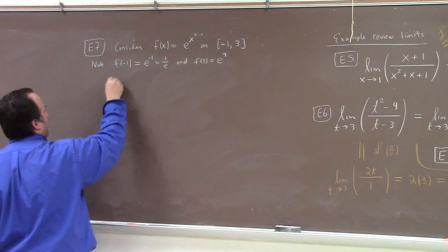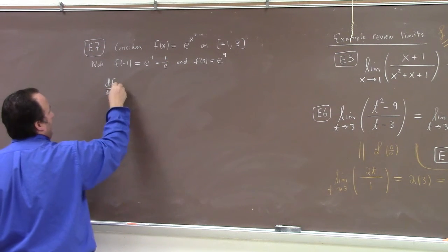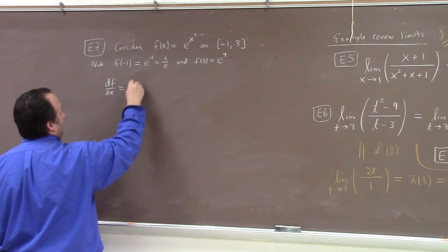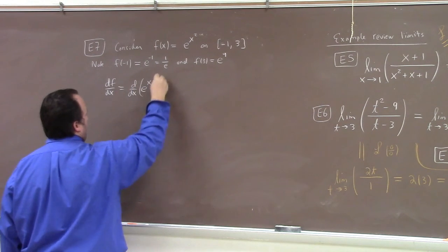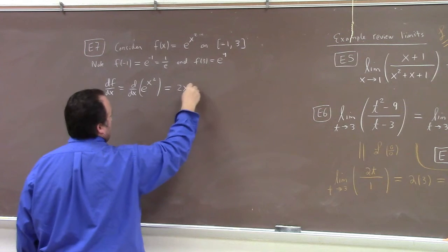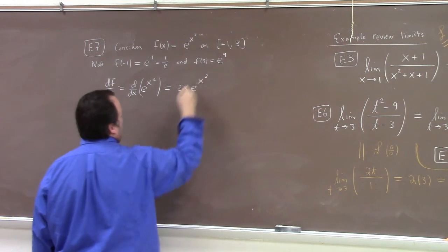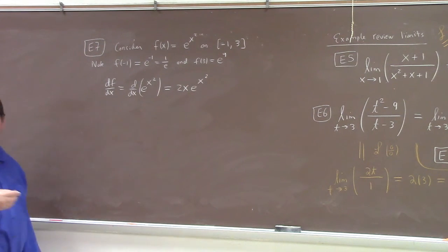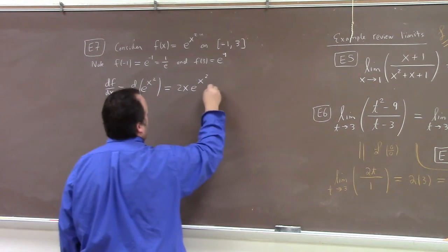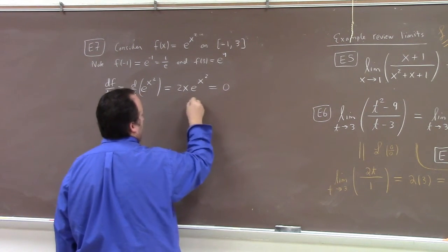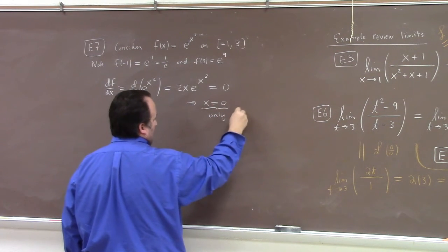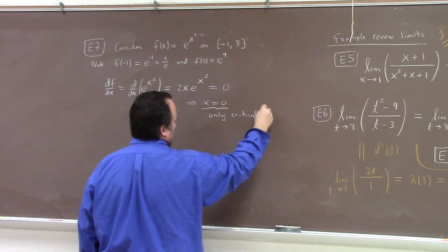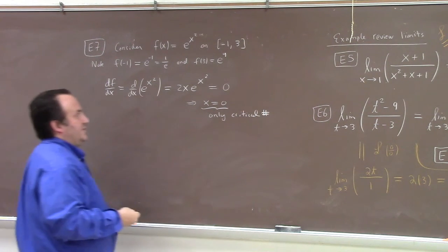Now, what's df dx? So what we got here is we've got 2x e to the x squared by the chain rule. So what is the critical point? Is there a critical point? If we put that equal to 0, x equals to 0 only.